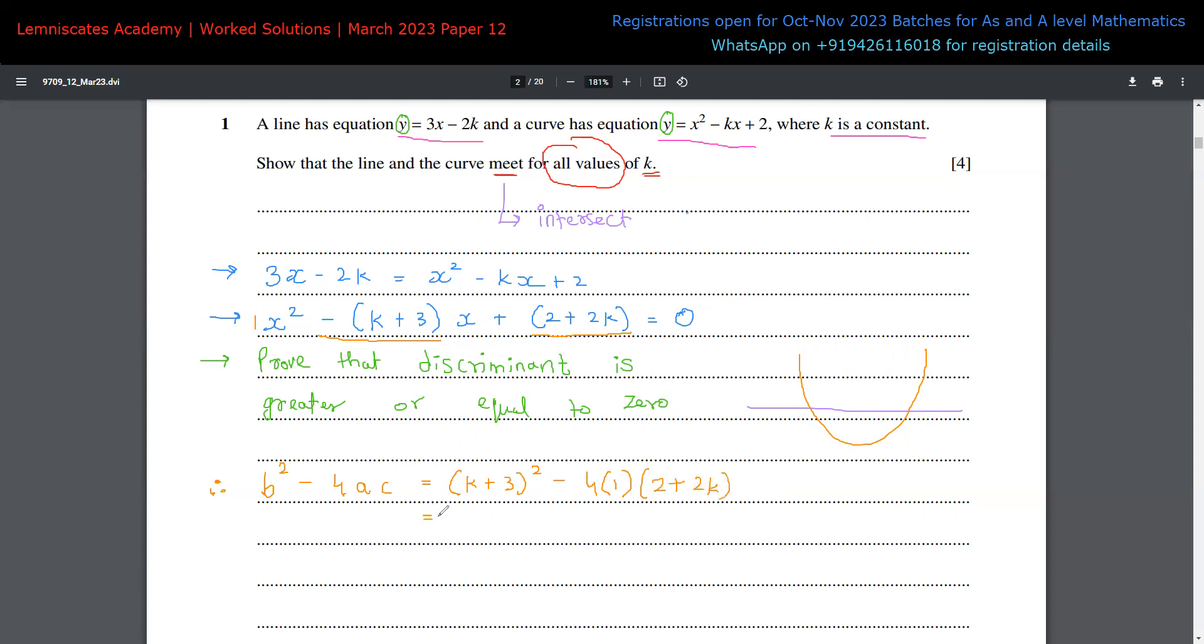And now, if I simplify this, it's going to become let's say K square plus six K plus nine, then this is four, four times two is eight, but there is also negative sign. So negative eight and negative eight K. And if I simplify this further, we are having K square, then six K minus eight K is minus two K, nine minus eight is one. So this is the final quadratic equation that we have of this discriminant.